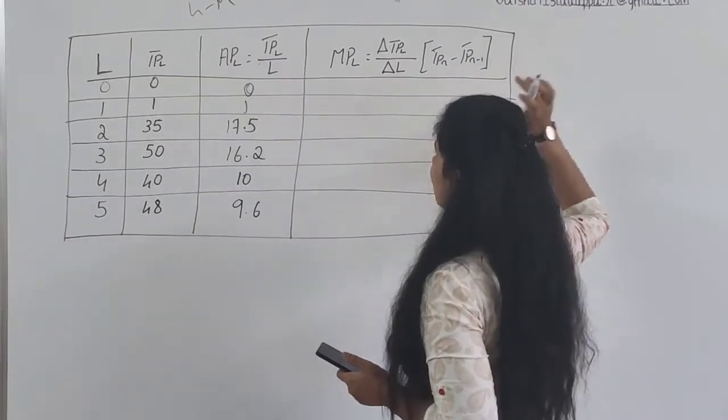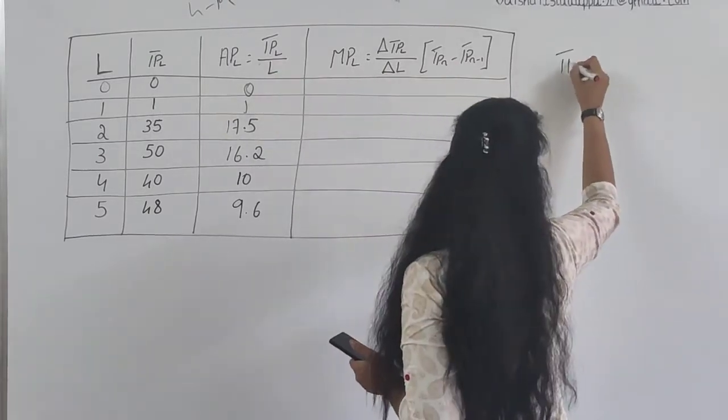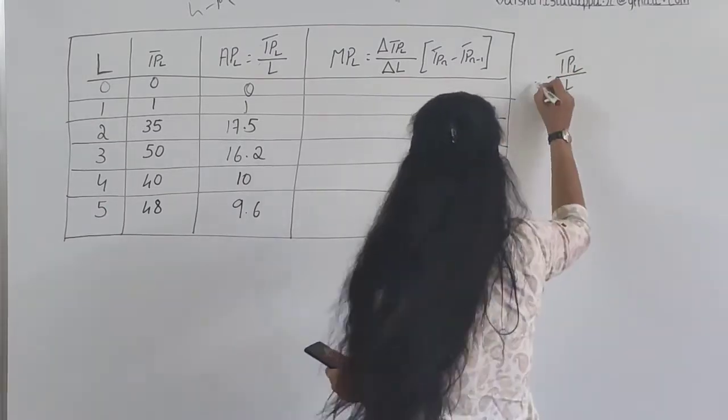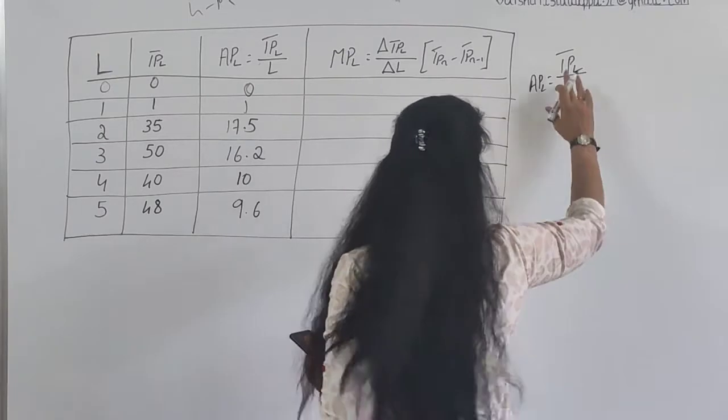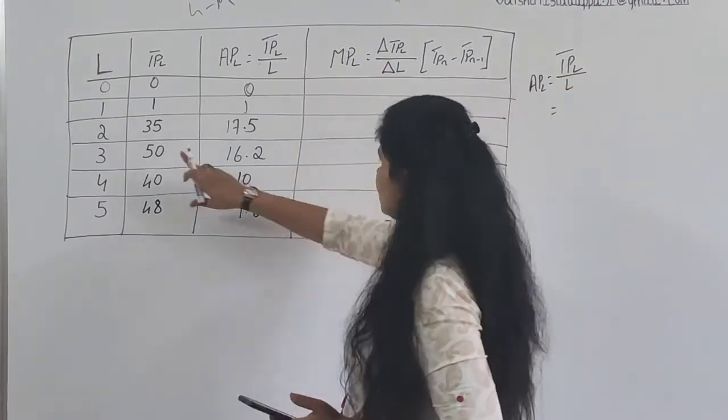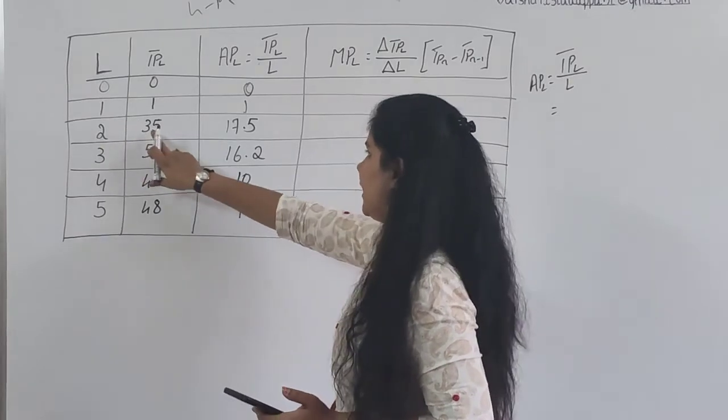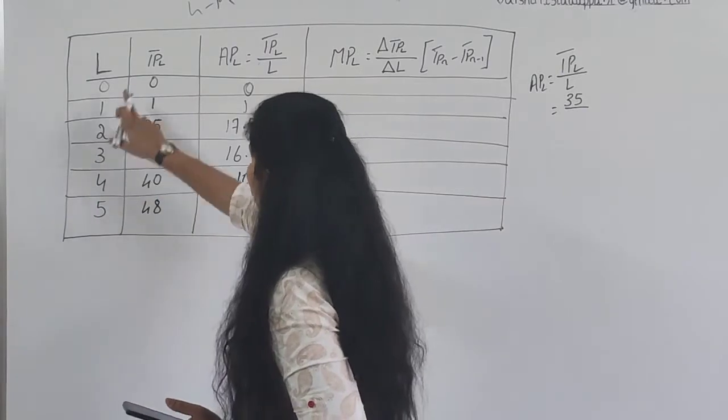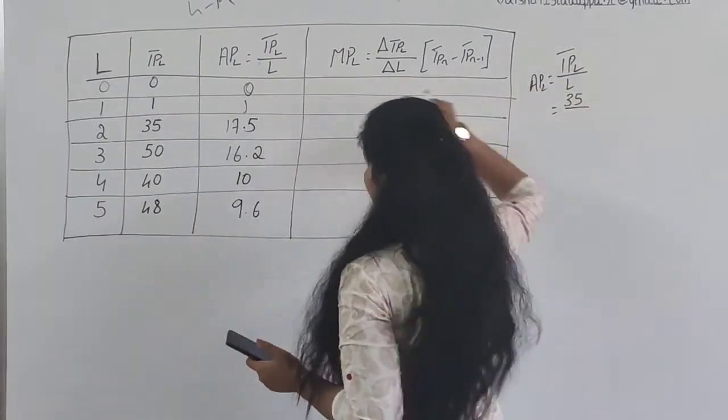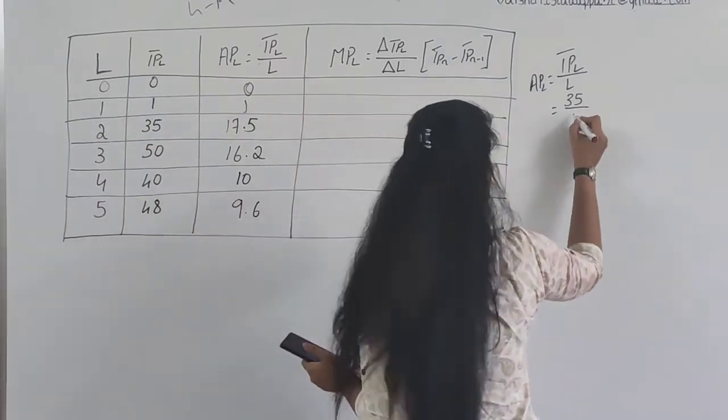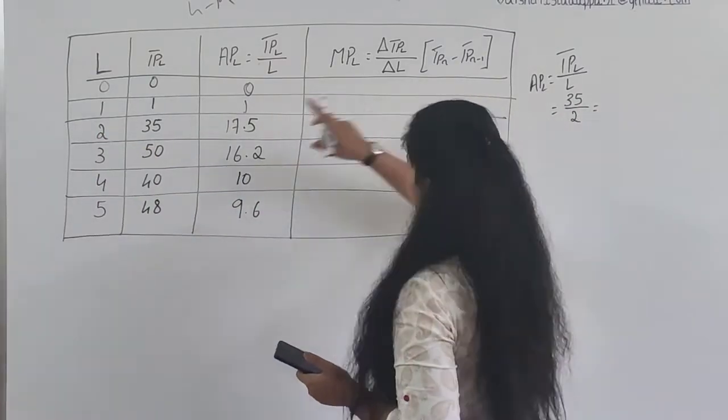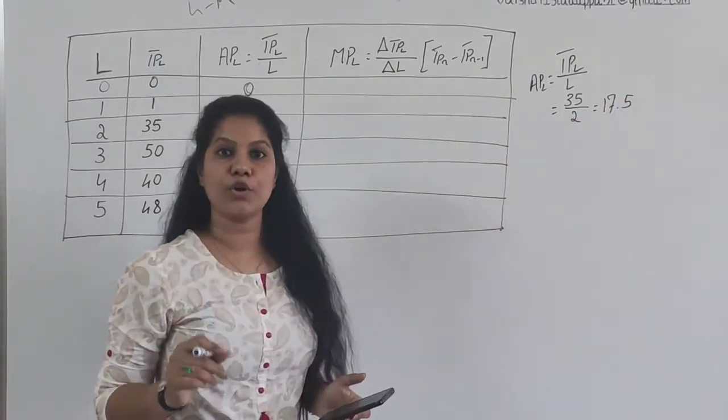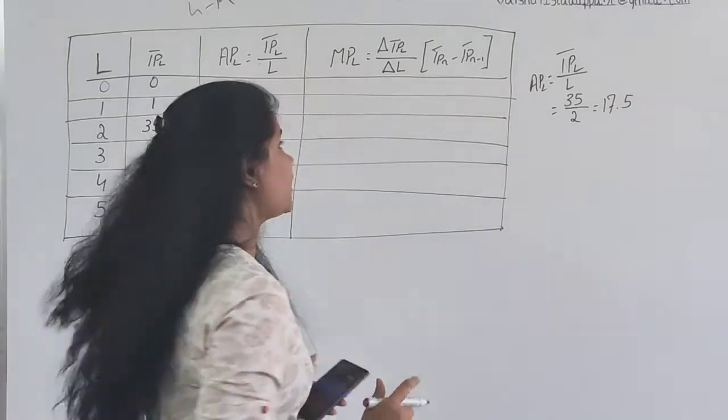Let me solve one exactly to show you how you're going to solve. TPL divided by L - this is the formula to find out average product of labor. So the formula will be TPL, which is 35, I'm taking this particular line. 35 divided by 2, TPL is 35, labor is 2, so the answer is 17.5. This is the way you find out average product.